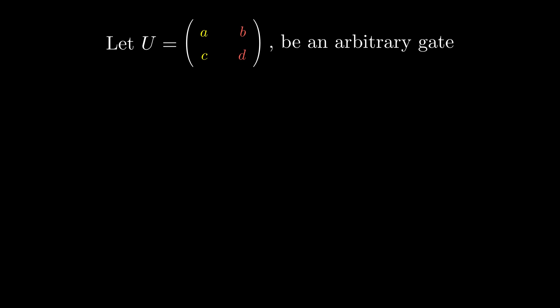The first column of the matrix indicates the column vector the 0 state becomes after applying the gate, and the second column indicates the column vector the 1 state becomes. Then we can factor out both our 0 and 1 states again to get back into Dirac notation.